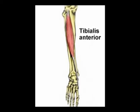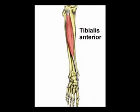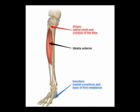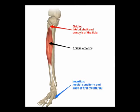The tibialis anterior muscle is classified as an extrinsic foot muscle. Its origin is in the lower leg and its insertion is in the foot. It is in the anterior compartment of the lower leg.